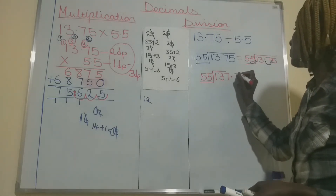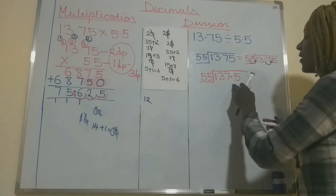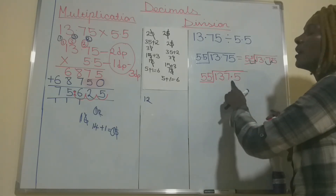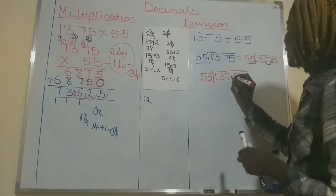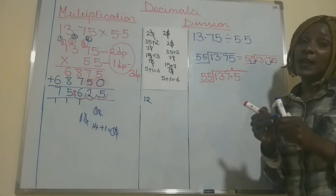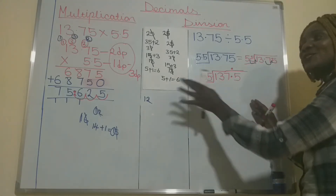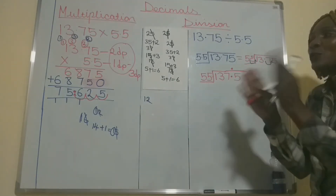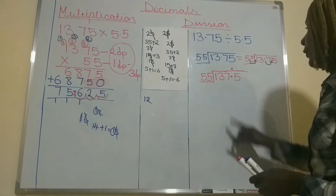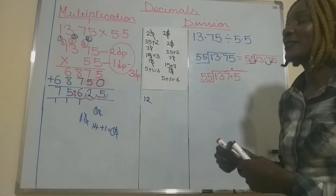After setting it up this way, the decimal point in the answer should also be in the same column above. Now, how many times does 55 go into 137? We work it out: 55 plus 55 is 110, and 110 plus 55 is 165. So 55 goes into 137 two times because 165 is bigger than 137, meaning we stick to two.